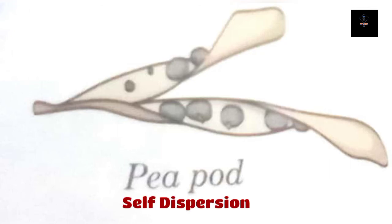Some plants also have self-dispersion. Fruits like the pea disperse by exploding — the pods containing the seeds burst open when they are dry, and the seeds scatter around.